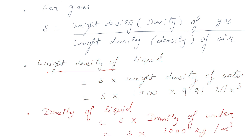If we want to find the density of a liquid and we have been given the specific gravity, we multiply the specific gravity by the density of water. So density of liquid = specific gravity × 1000 kg per meter cube, since the density of water is 1000 kg per meter cube.